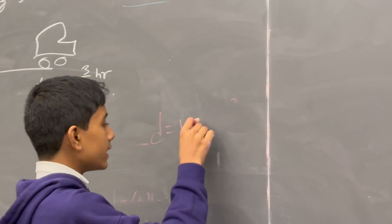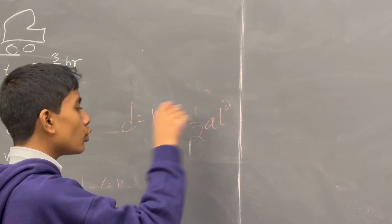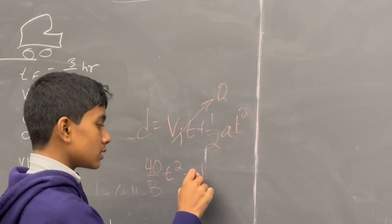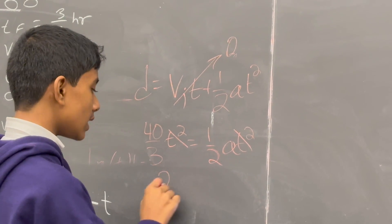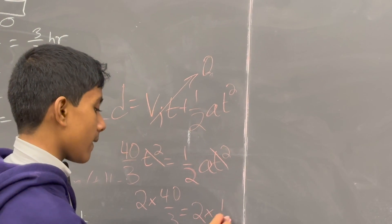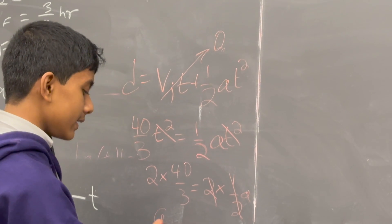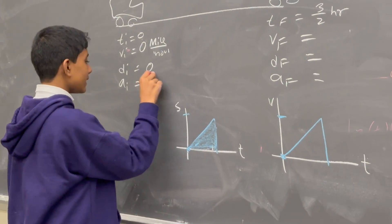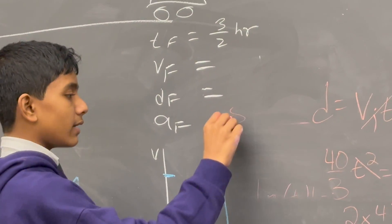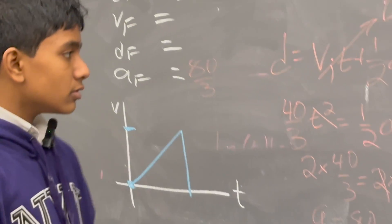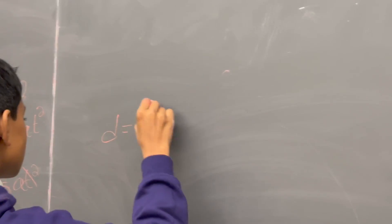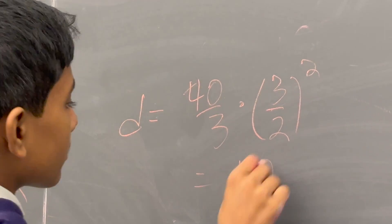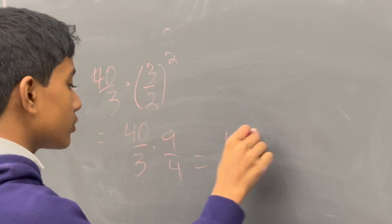D equals v_i times t plus half a t squared. And of course v_i is 0, but we don't know what a is. So we already know d is 40 over 3t squared. So clearly we can just cancel these out and multiply both sides by 2 to get that a is equal to 80 over 3 meters per second squared. Alright, so we write that. And clearly we can only use this when the acceleration is constant, so acceleration final is going to have to be the same thing. Now we just figure out what d final is by plugging in 3 over 2 over here. So this gives us 40 over 3 times 9 over 4, which gives us 10 times 3, or 30.